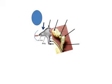Below the fossa incudis is a small conical structure called the pyramid, within which is the stapedius muscle, whose tendon emits from the apex of the pyramid, passing forwards to insert into the posterior aspect of the neck of the stapes.